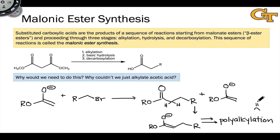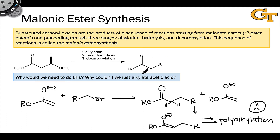That's generally not what we want, particularly in cases where we just want to install one alkyl group at the alpha carbon of an ester. Alkylation of esters is not without its problems, and if our goal is to get ultimately to a substituted carboxylic acid, we can't just alkylate an ester and then hydrolyze due to this polyalkylation issue.